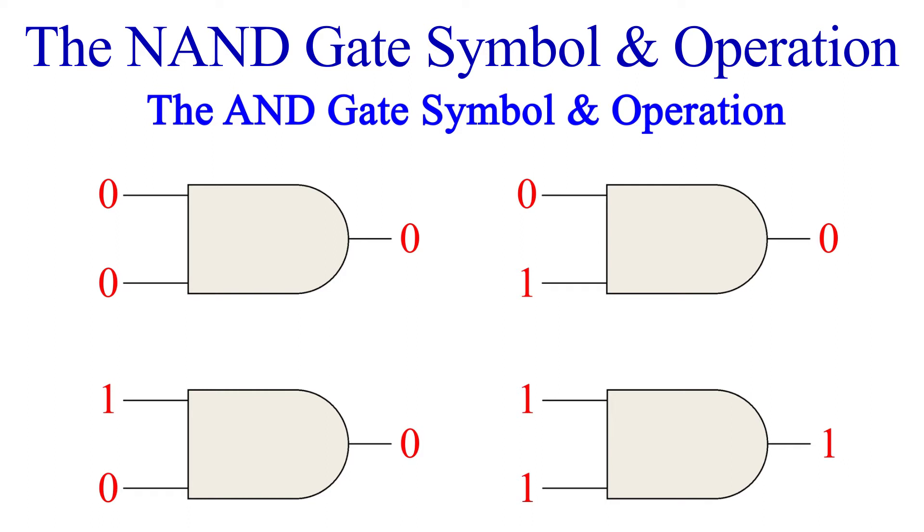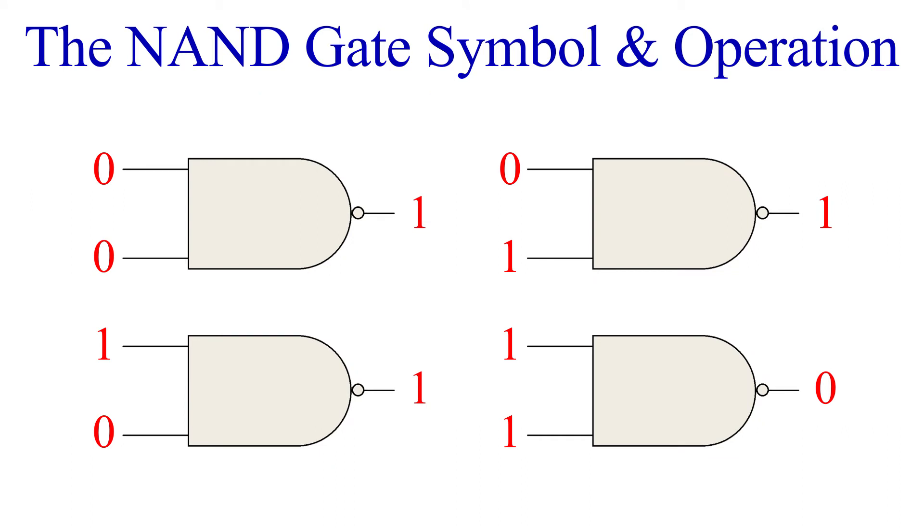Remember that an AND gate only produces a high output when all the inputs are high. For a NAND gate, this means that any input combination to the gate produces a high output except when all the inputs are high.